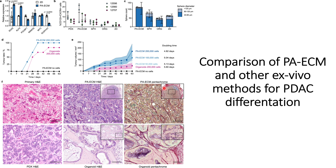After validating that cancer stem cell markers are overexpressed in PAECM compared to other axio models, they wanted to check whether pancreatic cancer cells cultured in PAECM versus organoid have any different effect on animal models. When they subcutaneously injected PAECM encapsulated with 200,000 cells and organoid with 200,000 cells, they found that PAECM has a higher tumor acceleration rate compared to organoid cells. They also observed that increasing the number of cells encapsulated with PAECM leads to increased tumor proliferation.